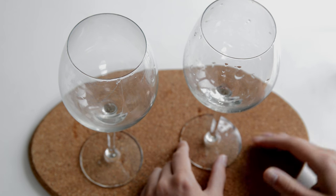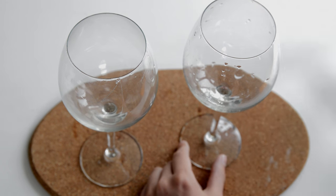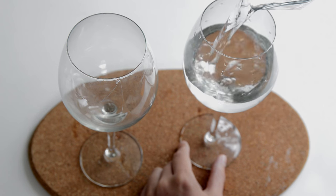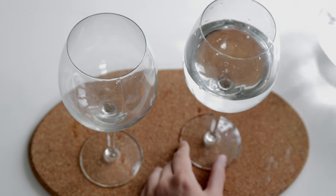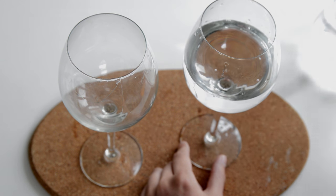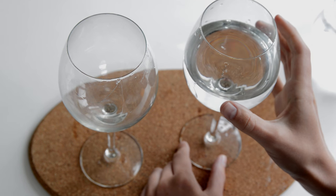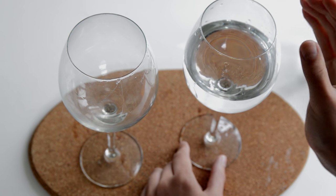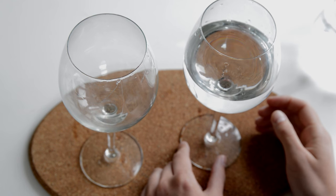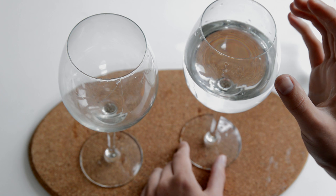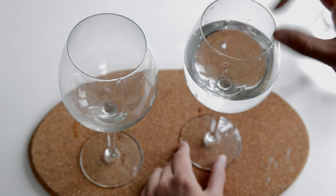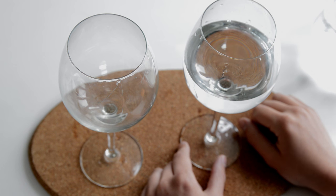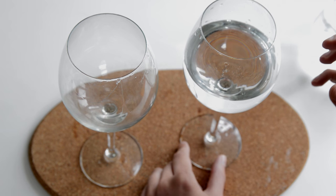You can change that frequency and therefore change the note by adding water to the glass, so the more water you add the lower the note. Now this is because as you add water you're essentially increasing mass and weight inside the glass, so as the glass vibrates you change the amount of mass the glass has to move every time it vibrates.